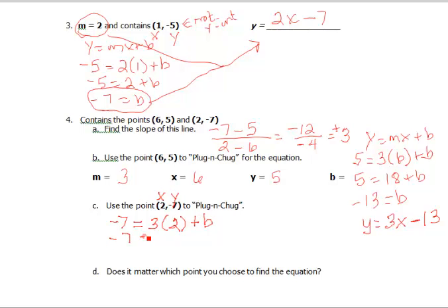So negative 7 equals 6 plus b, and if I subtract 6, I get negative 13. So I have y equals 3x plus negative 13.